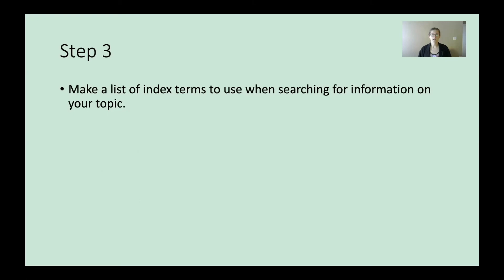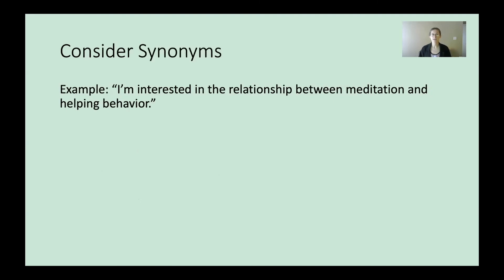Something else you need to think about is come up with synonyms of the words that you're looking for. Your initial thoughts of search terms may not lead you to what you're looking for. You may need to refine them. So make a list of the types of search terms you're going to use and what types of results they lead you to. If you're interested in the relationship between meditation and helping behavior, for example, like I am in some current studies I'm working on.